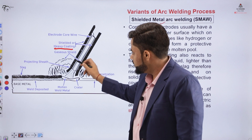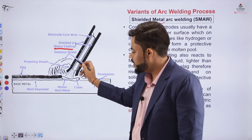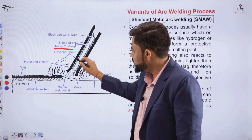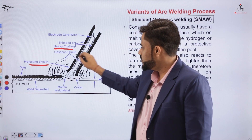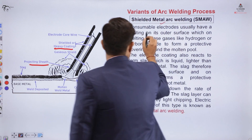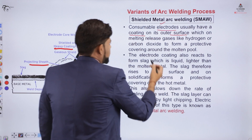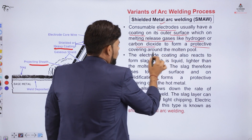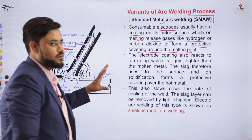The electrode melts and reacts with the heat already present on the surface, producing a shield on the workpiece surface to be welded. The consumable electrode has a coating on its outer surface which on melting releases gases — such as hydrogen, carbon dioxide, or other inert gases — that form a protective covering around the weld pool.